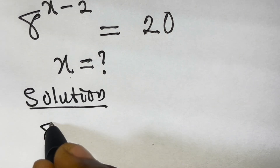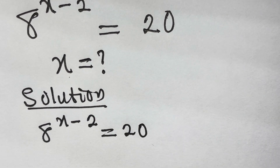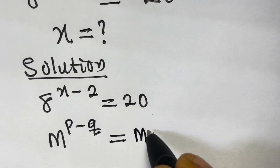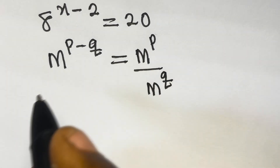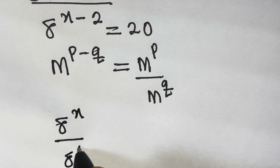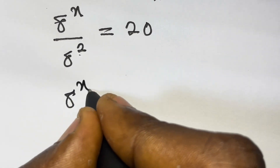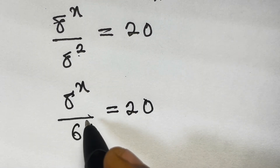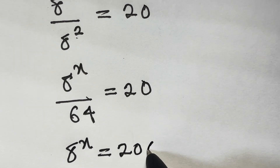So we have 8 to the power x minus 2 equals 20. Remember that when we have m raised to power p minus q, this equals m raised to power p divided by m raised to power q. So our equation becomes 8 raised to power x divided by 8 squared equals 20. Since 8 squared gives us 64, we have 8 raised to power x divided by 64 equals 20.